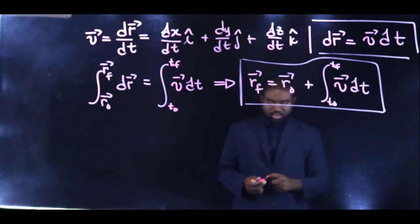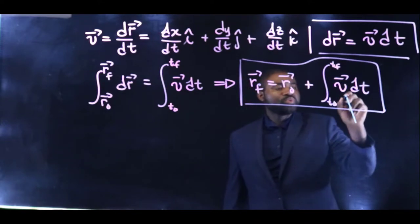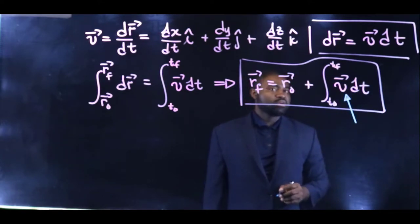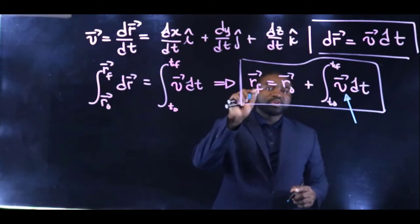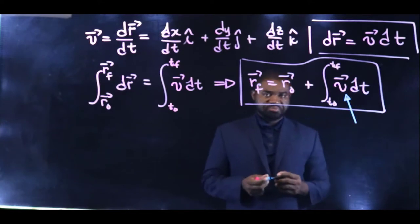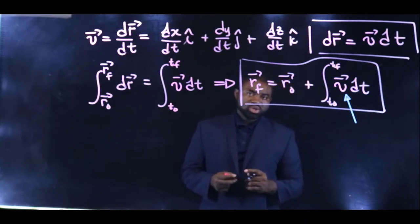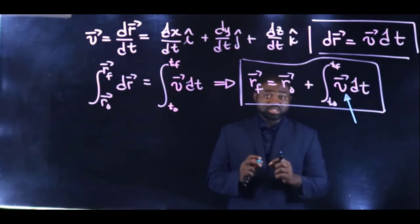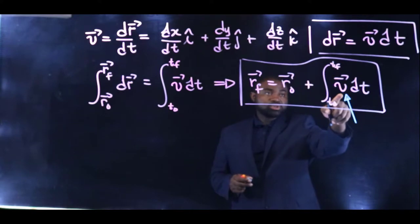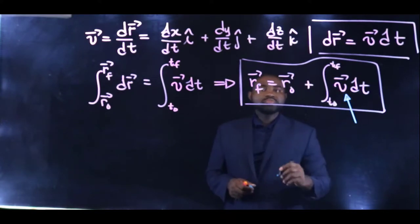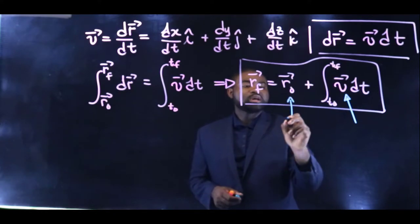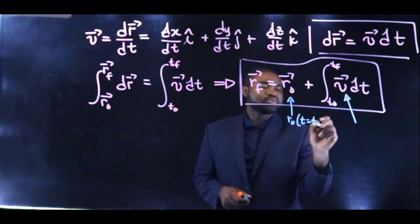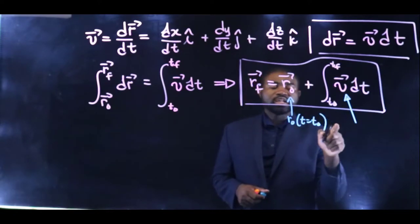The beauty of this equation lies in the fact that if we know the function v, then we can determine the position of the particle at any time t. And when this is the case we say that the motion of the system or the particle is completely described. But all that depends on knowing the function v. Keep in mind that r naught occurs when t is equal to 0. We call this the initial conditions.